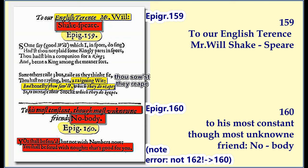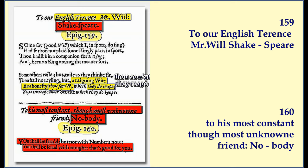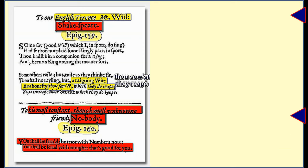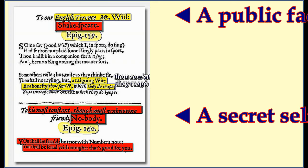The video points out how epigram 159 is paired with the one right after it, epigram 160, in a way that seems very deliberate — it's like Davis is trying to draw our attention to something specific. And then there's epigram 162, which refers to Shakespeare's 'most constant though most unknown friend' as nobody. The video argues that 'nobody' isn't just a random nickname — it's an allegory for a hidden identity, suggesting that Shakespeare had a split identity.